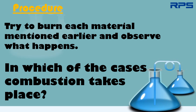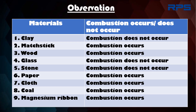In which of the cases does combustion take place? You will observe that combustion does not occur in clay, glass, and stone. Combustion occurs in a match stick, a piece of wood, a piece of paper, cloth, a piece of coal, and magnesium ribbon.